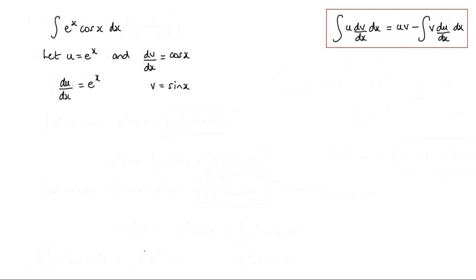So now I can pop these values into this rule here. So the integral of e to the x cos x, remember that's what I started with here, is equal to u times v, which will be e to the x sin x, minus the integral of v times du dx, which will be e to the x sin x dx.